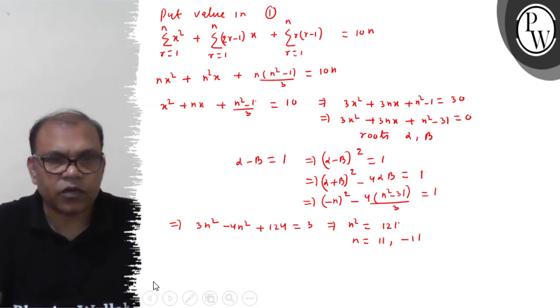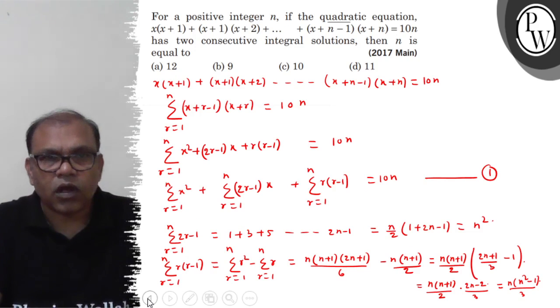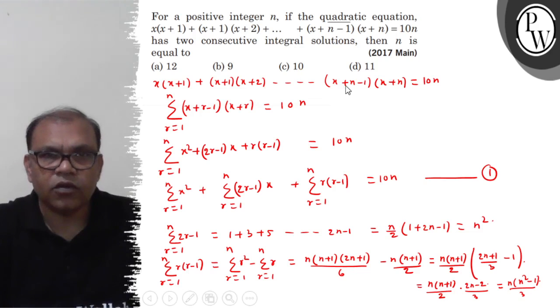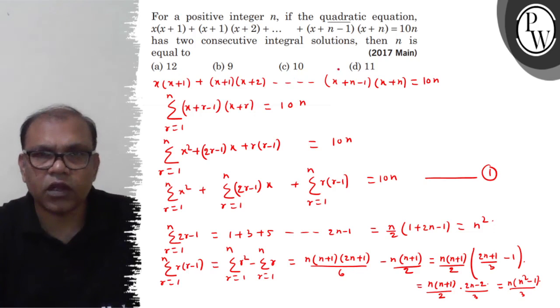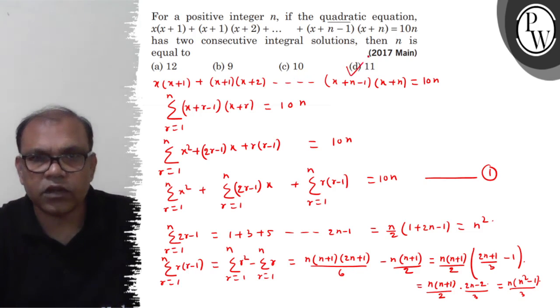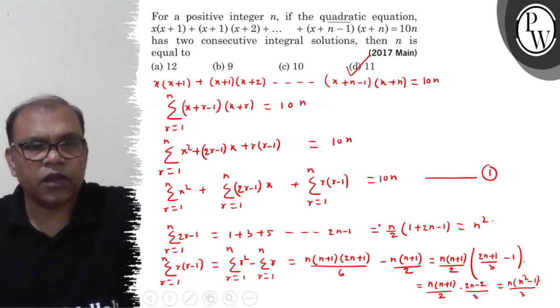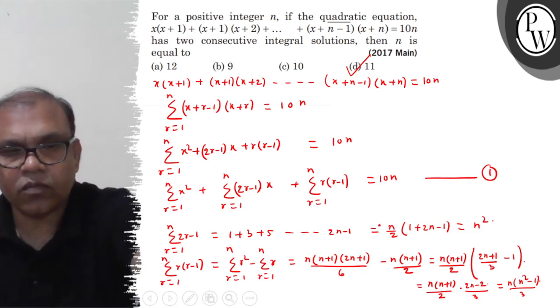So, check your options — the answer is option B, which is n = 11. I hope you understood it well. Thank you.